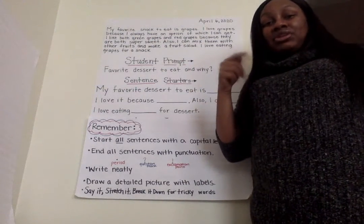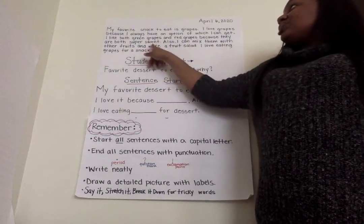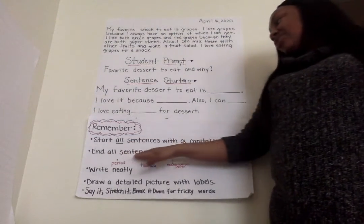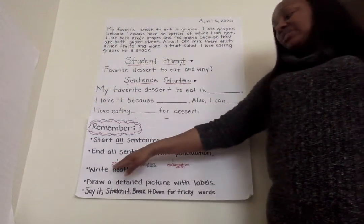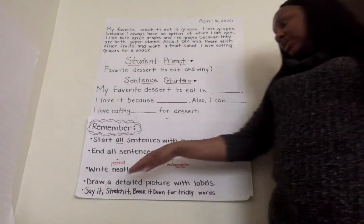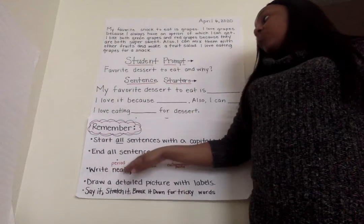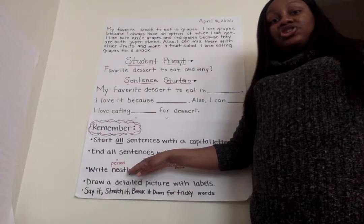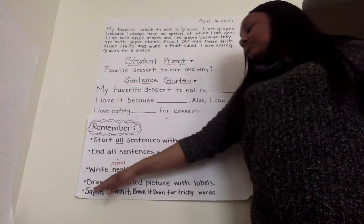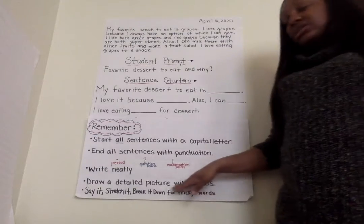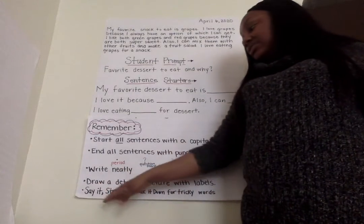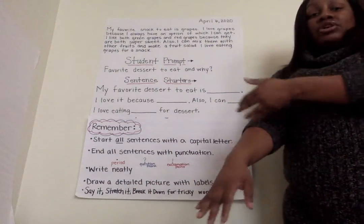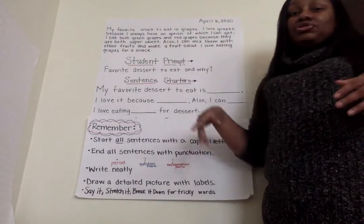Just like I was able to look back in my old Chuck video to help me remember tricky words. So remember: start all sentences with a capital letter, end all sentences with a punctuation mark — that means a period, a question mark, or an exclamation point. Write neatly — make sure that when you write it's so neat that when you send it to your teacher, maybe you can get shouted out in the next writing video. You're gonna draw a detailed picture with labels — make sure it's nice and neat and add colors. And when you get to a tricky word, say the word, stretch the word out, and break the word down to make it easier to spell in your short story.